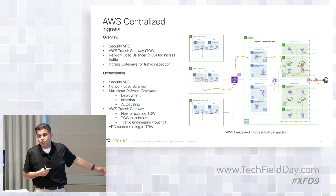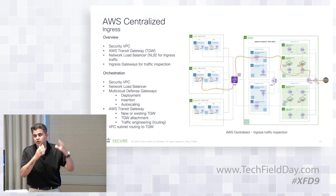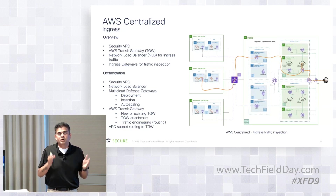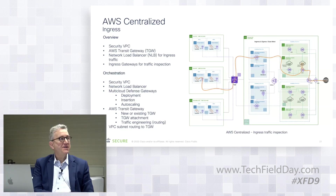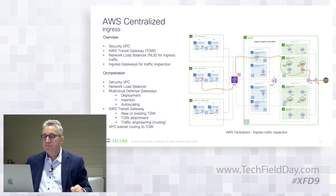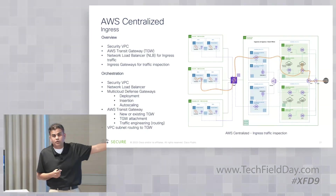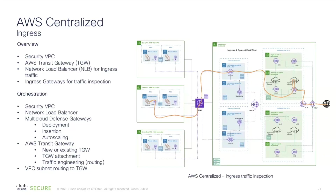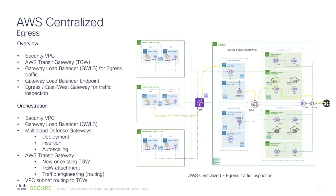The entire automation and orchestration of this particular architecture is done automatically by the multi-cloud defense controller, and it physically manifests in your AWS account as a CloudFormation template. For ingress traffic flow, traffic first lands on the internet gateway, then goes to the network load balancer, then to the ingress gateway, then to the transit gateway, and finally to the destination application.